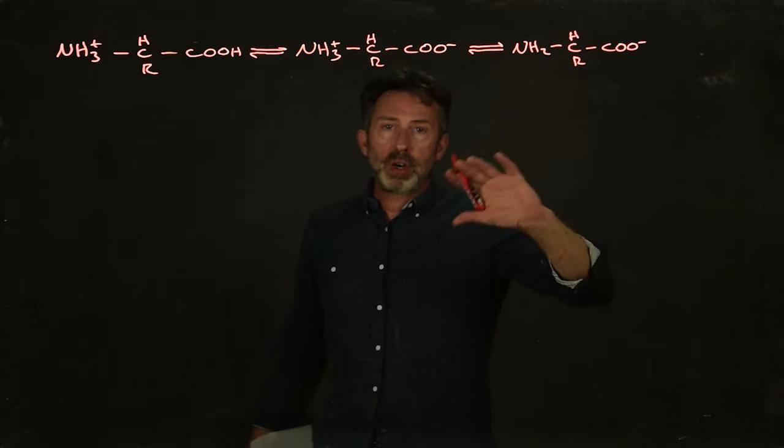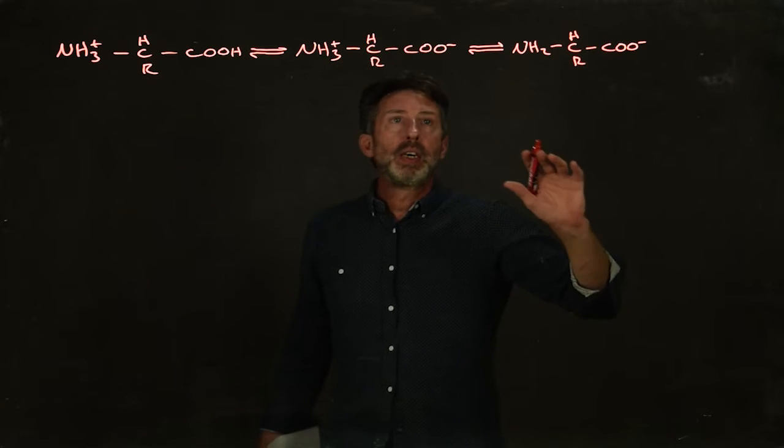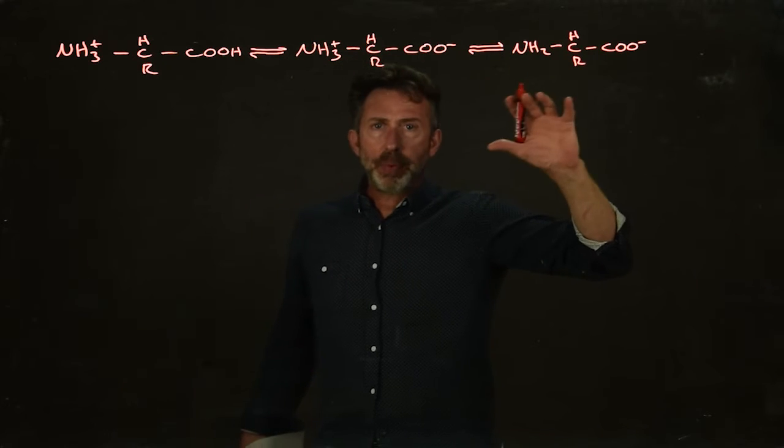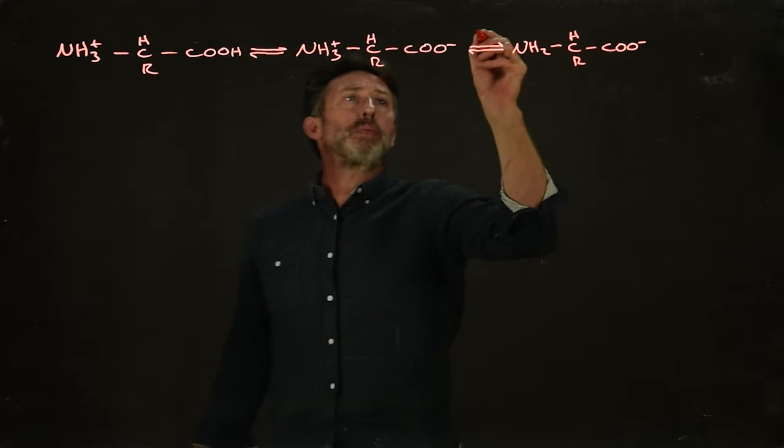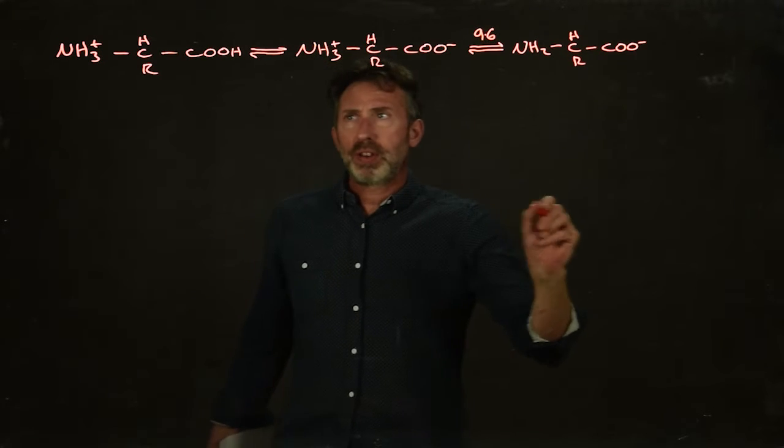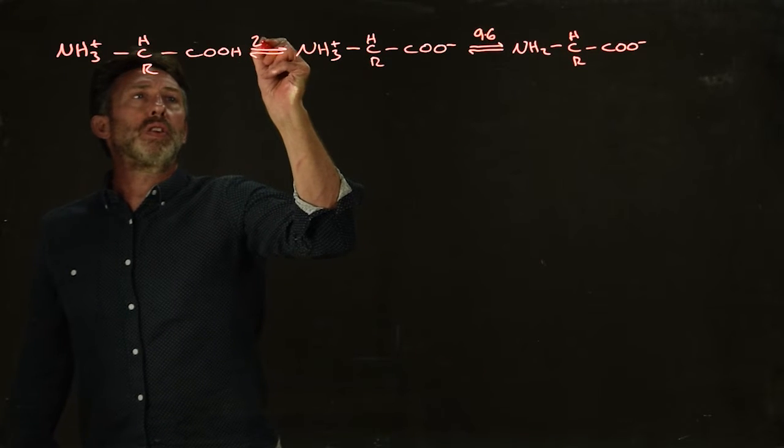We've got these three forms of the amino acid, and these two ionizations happen at different pHs—they've got different pKa's. The pKa of this equilibrium is at 9.6, and this one here is at 2.3.